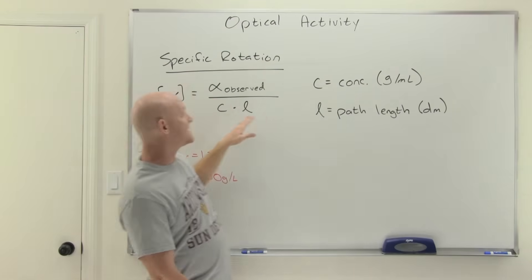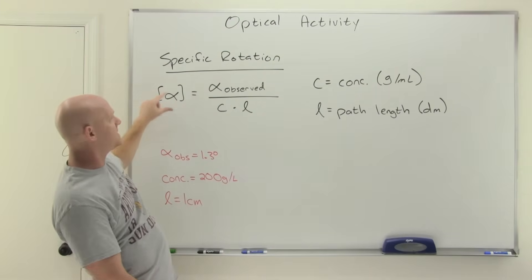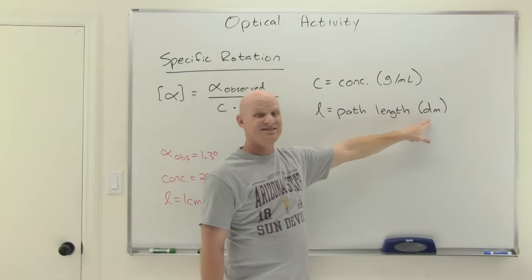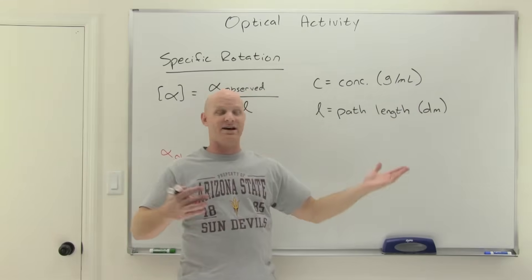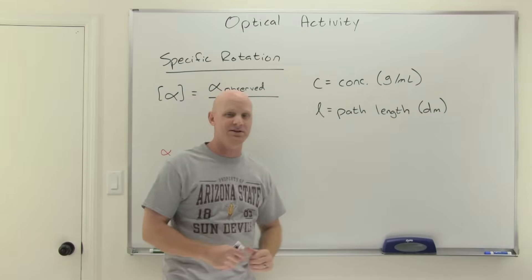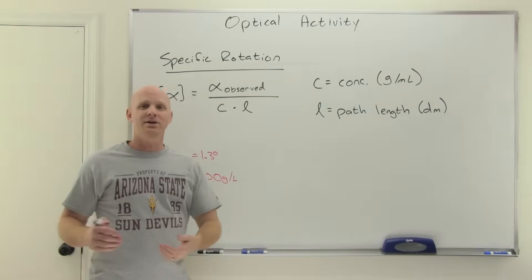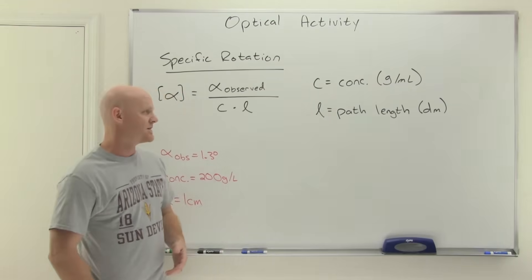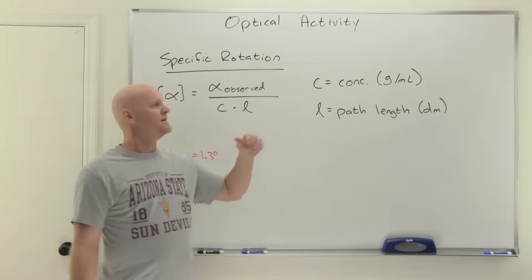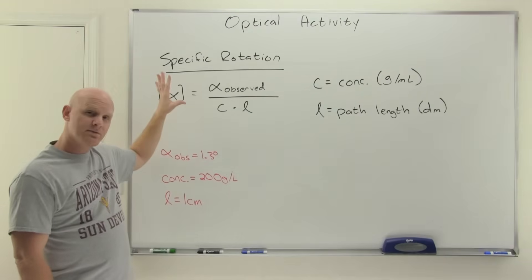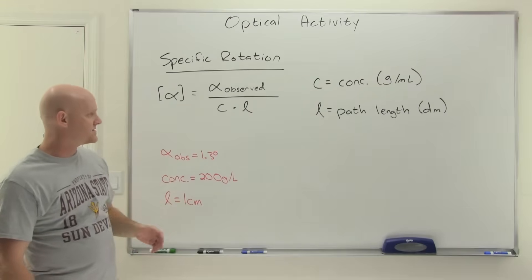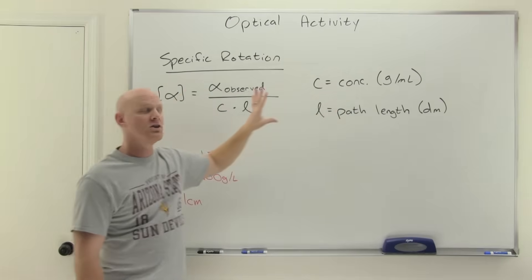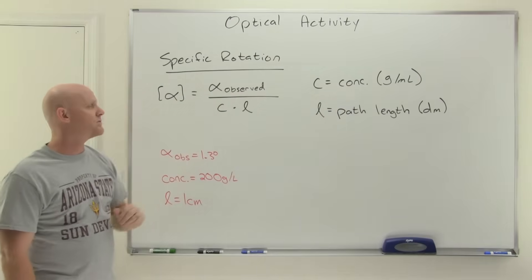And so what they do is they kind of scale it with this lovely calculation and they take the observed rotation for your specific solution and path length and stuff like that. But then they divide it to scale it by the concentration and path length. And here's where things get a little bit technical. That concentration, according to this formula, to get your specific rotation here has to be in grams per milliliter. And your path length, and this is horrible, has to be in decimeters, which we pretty much, I don't know of another place where we commonly use decimeters. So you should know that there are 10 centimeters in a decimeter. There are 10 decimeters in a meter.